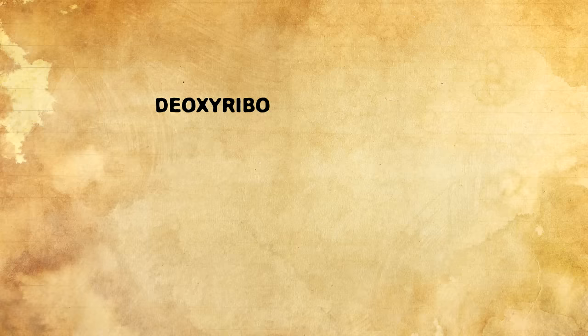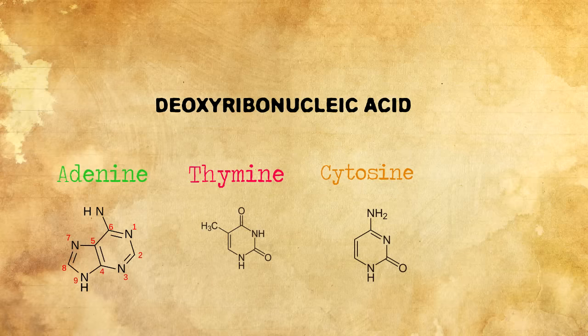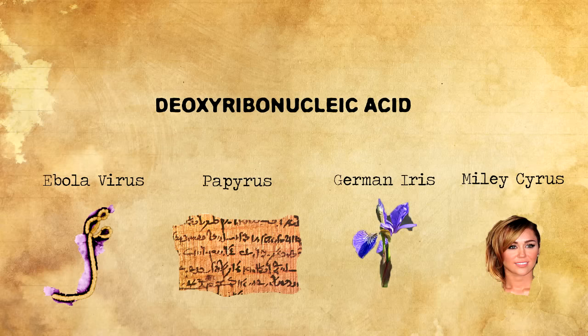A little further up, and we get to the code of life, deoxyribonucleic acid, also known as DNA. DNA is made of a sneeze called ATIG, or Adenine, Thymine, Cytosine, and Guanine. Depending on how these are arranged, you can get anything from the Ebola virus to Papyrus to the German Iris to Miley Cyrus.